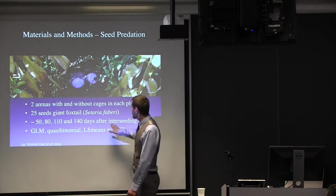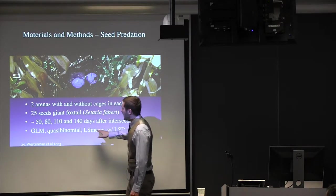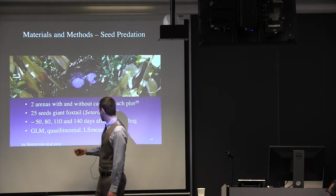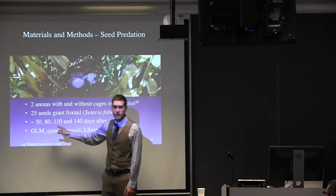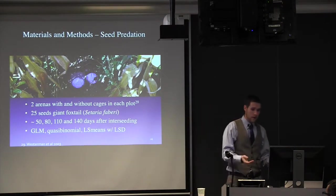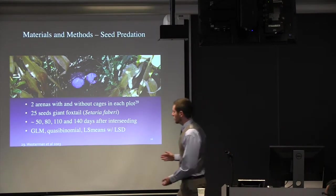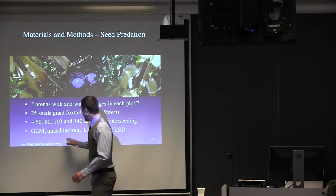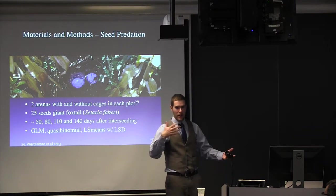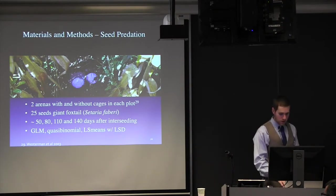Insects like beetles are not particularly intelligent. And if there's a bit of a lip on that arena, they'll just bump into it and then go away. So you have to be very, very careful with making sure that's at soil level. And so for my experiment, we just used giant foxtail seeds. And I sampled seed predation at four different dates after interseeding the cover crop in all three sites. And the way I analyzed this was with GLM. This was a quasi-binomial. So it's zero-inflated and a lot of over-dispersion, which is why we have the quasi and binomial defining a seed being eaten as a success and a seed not being eaten as failure. And then we compared means with LSD.